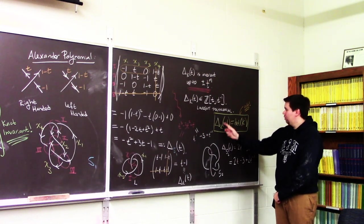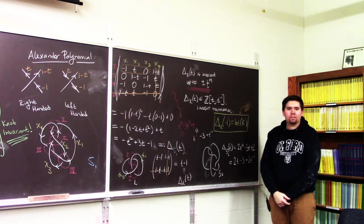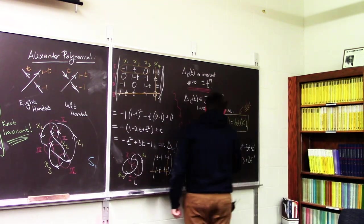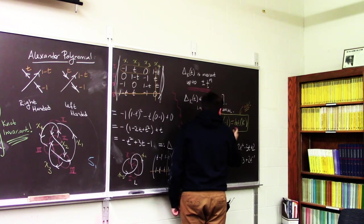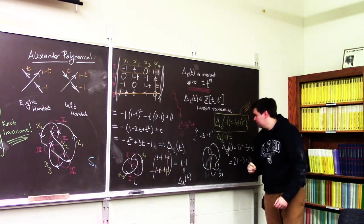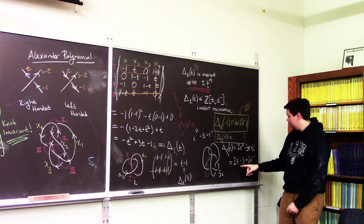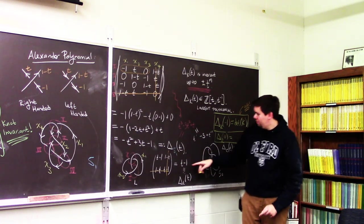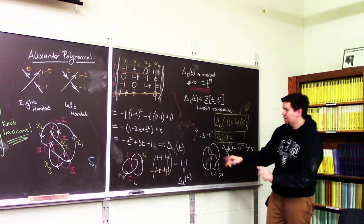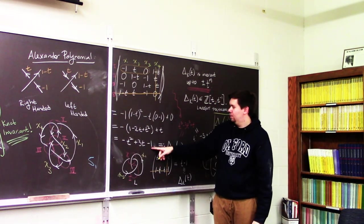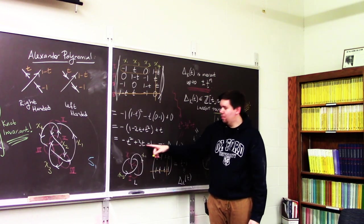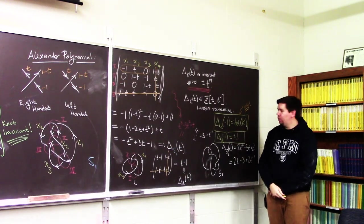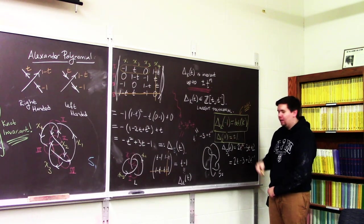Another property: what if you plug in positive 1? For the knot with polynomial 2t² − 3t + 2, plugging in 1 gives 4 − 3 = 1. For the figure-eight polynomial, plugging in 1 gives −1 + 3 − 1 = 1. We keep getting 1. You can show that plugging in +1 always comes out to be plus or minus 1.